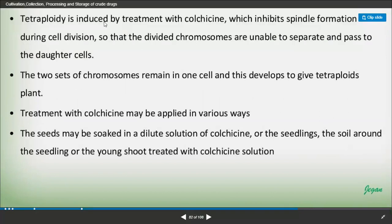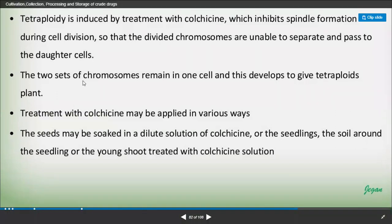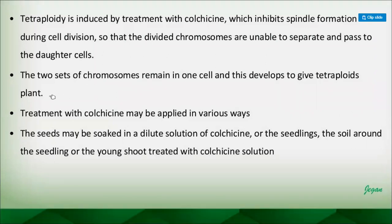Tetraploidy is induced by treatment with colchicine, which inhibits spindle formation during cell division so that the divided chromosomes are unable to separate and pass to the daughter cell. The two sets of chromosomes remain in one cell, and this develops to give a tetraploid plant with four sets of chromosomes.